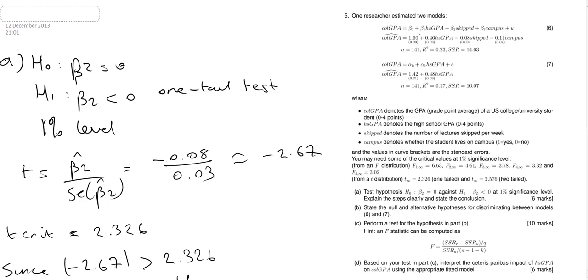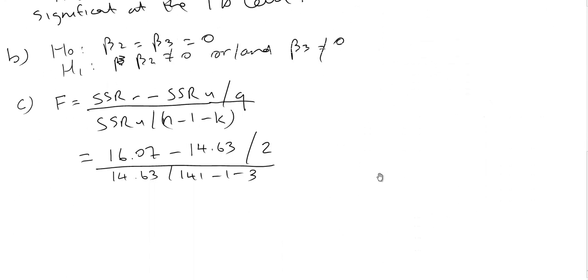That will be 141 minus 1 minus 3, the number of parameters in the unrestricted model: beta 1, beta 2, beta 3, and that's where that 3 comes from. Subbing all that in and calculating that through, we get 6.55 approximately.